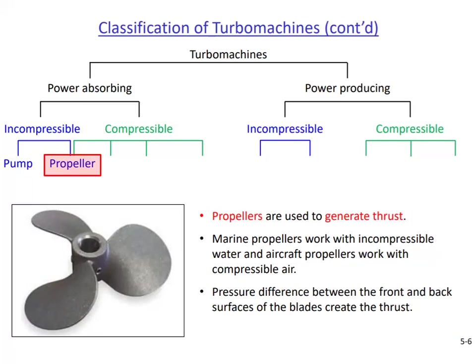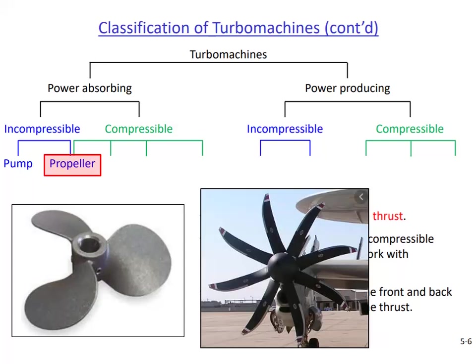The next machine is the propeller. It is listed as both an incompressible and a compressible flow machine. Marine propellers are used in ships, boats, and submarines — they work with incompressible water. But some aircraft also use propellers, where the high-speed air flowing over them can have a Mach number larger than 0.3 and compressibility effects may be considerably large.